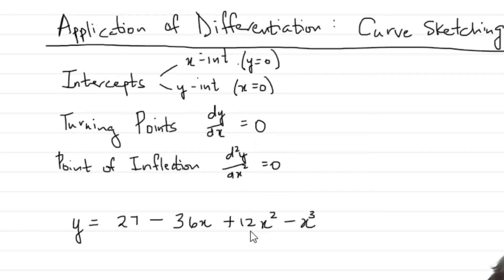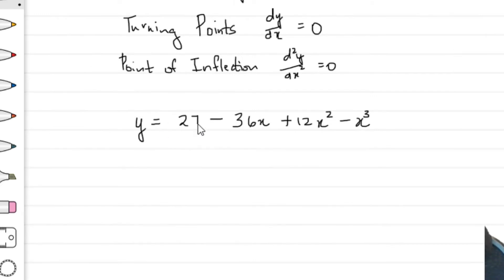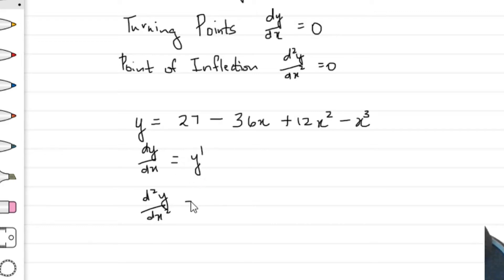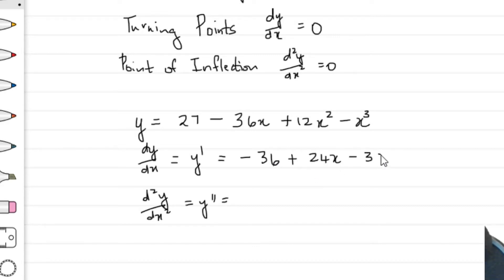Your point of inflection is where your second derivative is going to be zero. The example we're looking at is y = 27 − 36x + 12x² − x³. We need to find our first derivative and our second derivative. The first derivative is −36 + 24x − 3x², and the second derivative is 24 − 6x. These are the three functions we're going to be working with.